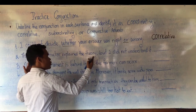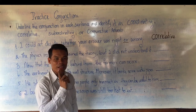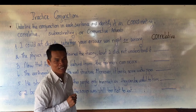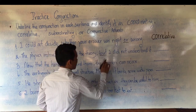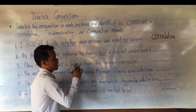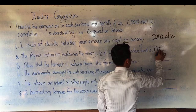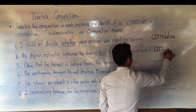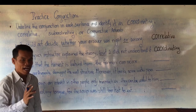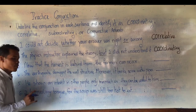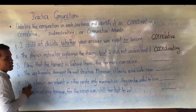Number two: 'The physics instructor explained the theory, but I did not understand it.' Two sentences joined by 'but.' When you see the word 'but,' you remember FANBOYS — 'B' for 'but.' So it is a coordinating conjunction.